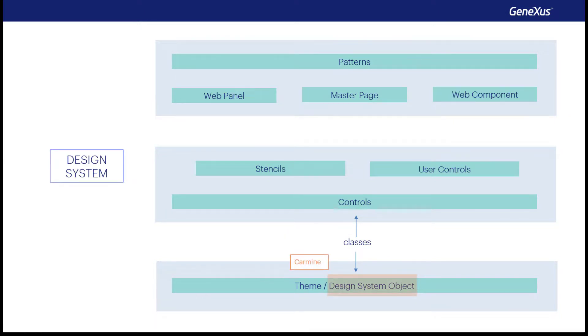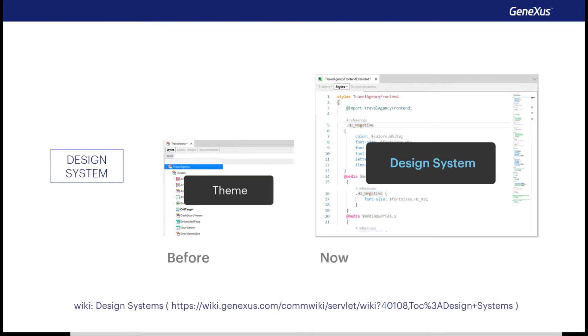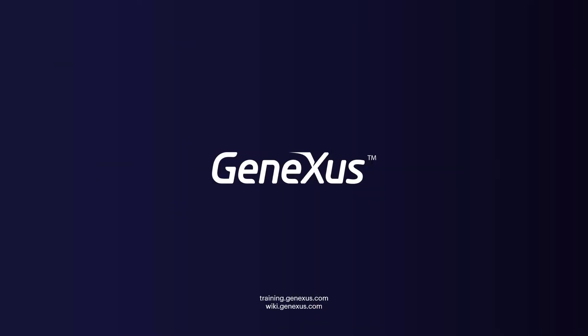All of this will become a reality and fully come to life when Unanima is released — a complete design system with a new design for the pattern and transactions too. There is a lot more to say and show, but here we simply wanted to present a complete overview of how the design system of any application is modeled in GeneXus, at this turning point when we're changing from the use of the theme object to the new design system object. There's already enough material in videos and wiki articles for you to learn more about all this whenever you want.